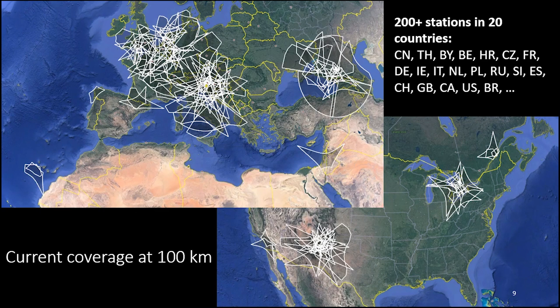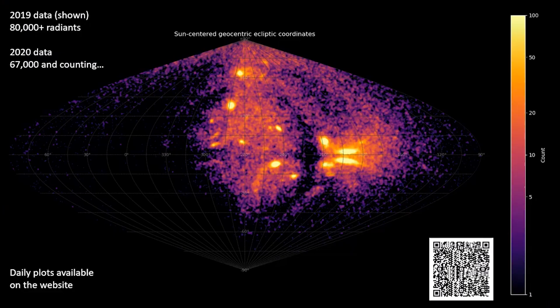This is the current coverage of the network at a height of 100 kilometers. We currently have more than 200 stations in 20 different countries. Most of Central and Western Europe is well covered, and we have more cameras being deployed in northern Spain, Israel, and Ireland. In North America, Ontario and parts of Quebec are covered, and we have a large network in New Mexico, with stations in Arizona to be deployed soon. The radiance data is available on our website. In 2019 we had about 80,000 radiant measurements, and in 2020 about 67,000 and counting. Our current goal is about 1,000 meteor orbits per day, and we'd like to expand to Asia, Hawaii, and the whole southern hemisphere.